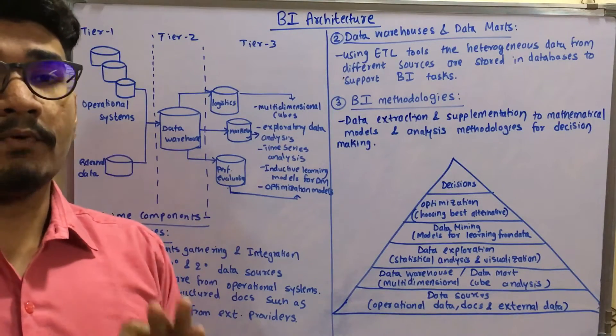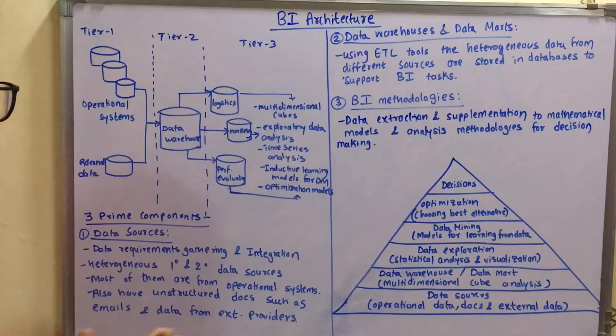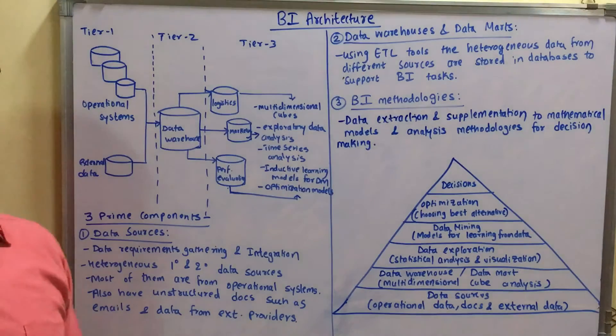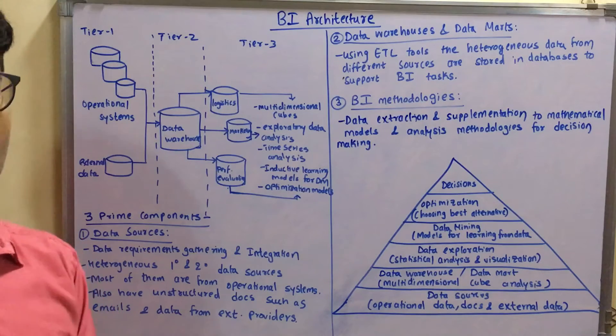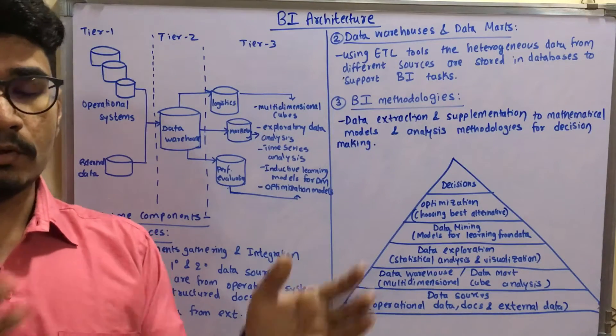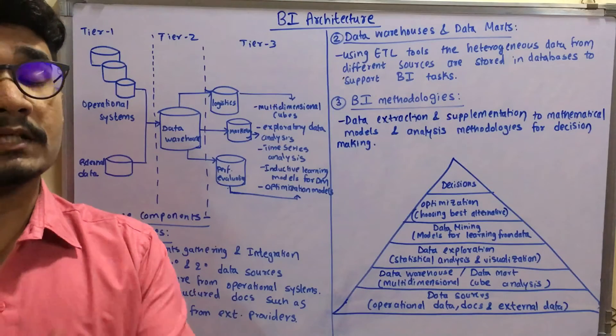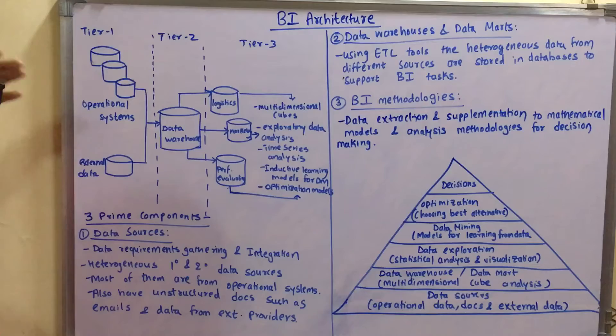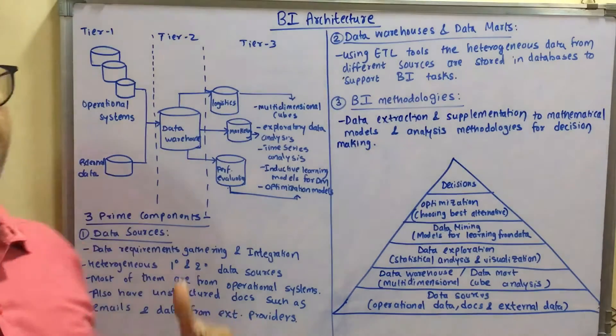Before that we have to understand that there are three major or prime components for BI architecture. So the very first one we have is the data sources. In data sources, all those data requirements and gathering and all kind of integrations from multiple heterogeneous primary and secondary sources.